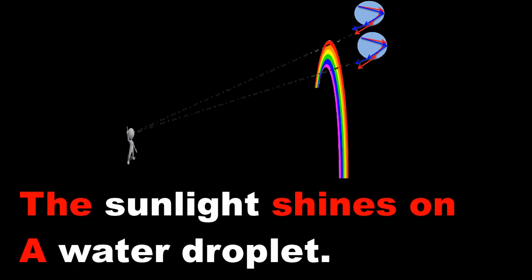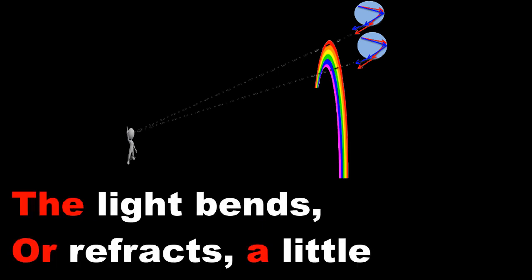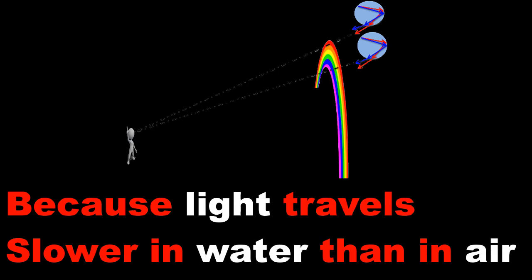What happens in the water droplets? The sunlight shines on a water droplet. As the light passes into the droplet, the light bends or refracts a little, because light travels slower in water than in air.